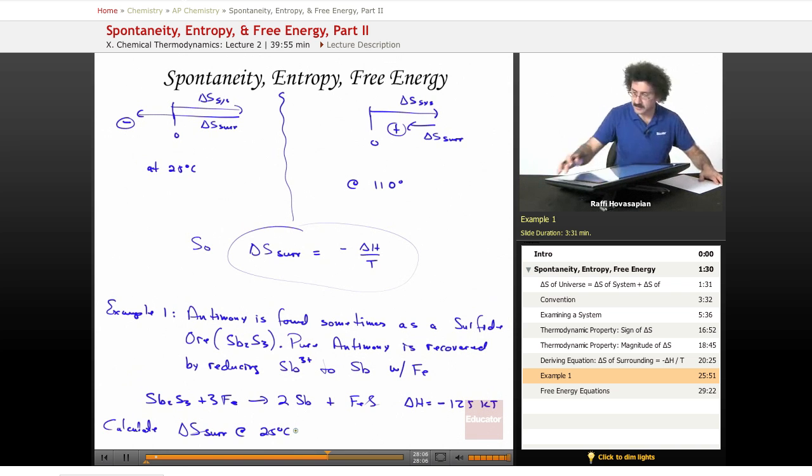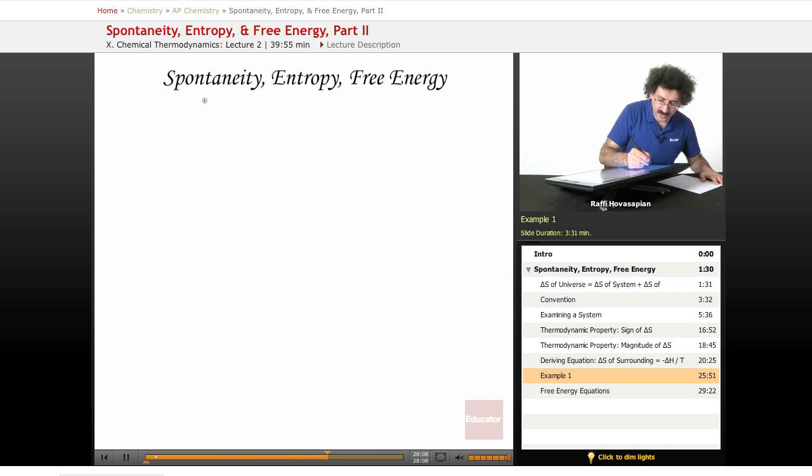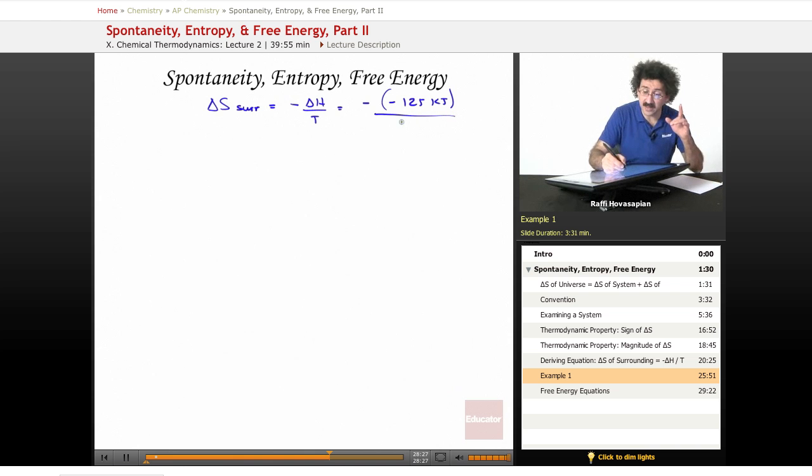We know what delta S of surroundings is. Delta S of surroundings is equal to negative delta H divided by T, is equal to negative negative 125 kilojoules divided by 25 degrees Celsius, absolute temperature meaning in Kelvin. So 298 K.